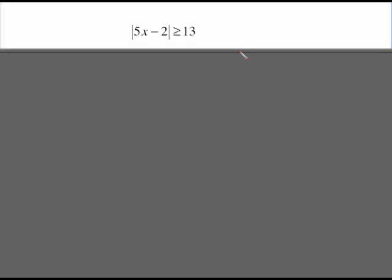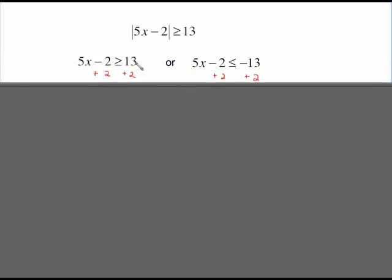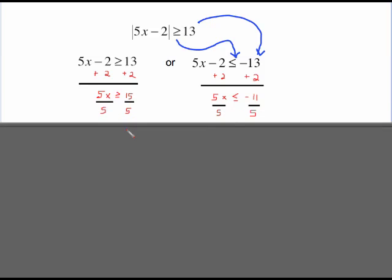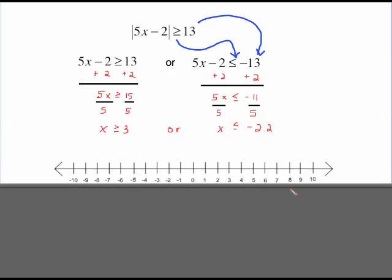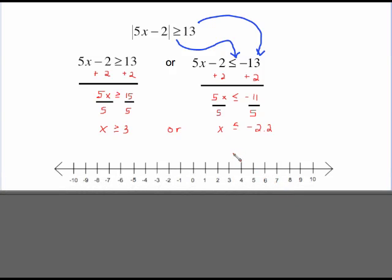All right, more stuff inside the bars but it's still the same setup. Positive case is as if I could just remove those bars. That's this 5x minus 2 greater than or equal to 13. Negative case, be sure you change that to a negative 13 and you change that inequality sign to face the other way. And then you have simple inequalities to solve. Add 2 to both sides. Gives me 5x greater than or equal to 15. Divide by 5, x greater than or equal to 3. On the right side same process just different arithmetic and we end up with x less than or equal to negative 2.2. Because this is an improper fraction it's a good idea to change it either to a mixed number or a decimal so you know where to put it on your number line.